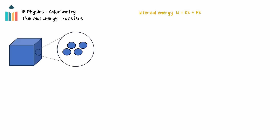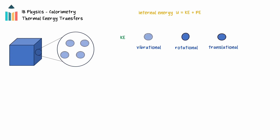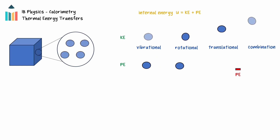The kinetic energy of the particles is due to the motion of the particles. This motion can be either vibration, rotation, linear motion, or a combination of all three. The degree of freedom that a particle has to move is determined by the state of the substance: solid, liquid, or gas. The potential energy is due to the attractive intermolecular forces. The further apart the particles are, the higher the potential energy is.